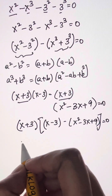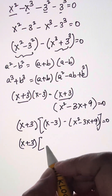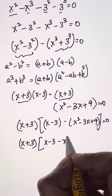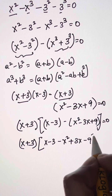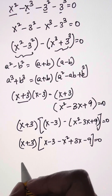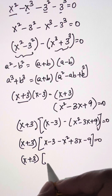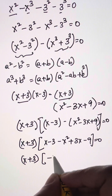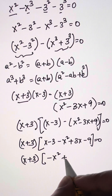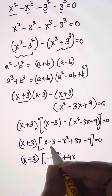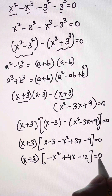This is as it is: x plus 3. Inside, we're going to open the brackets: x minus 3 minus x squared plus 3x minus 9 is equal to 0. So now we have (x+3) times, rearranging the terms: negative x squared first, then 3x plus x is 4x, negative 9 minus 3 is negative 12, equal to 0.